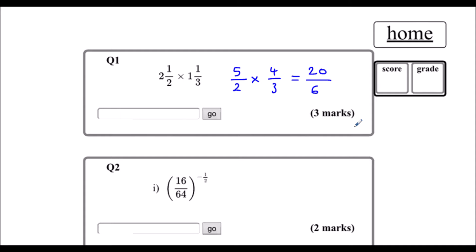And I can simplify my fraction as well. 20 and 6 are both in the 2 times table, so I can half the top and half the bottom. So my answer is 10 thirds.